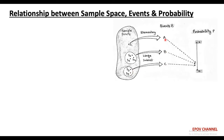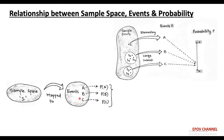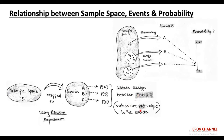So here we observe a relationship between sample space and events. The sample space is mapped to a number of events that depend on event statements, and corresponding to these events, we find the probability. In short, the relationship is: sample space S is mapped to a number of events using any random experiment, and based on event statements, we find the probability of occurrence of those events, whose values lie between 0 and 1.